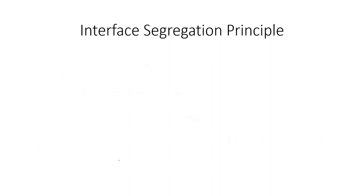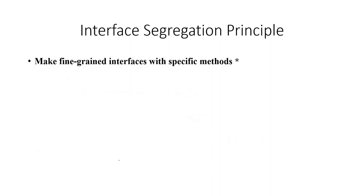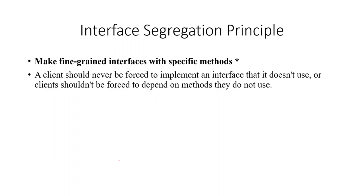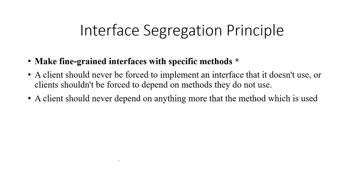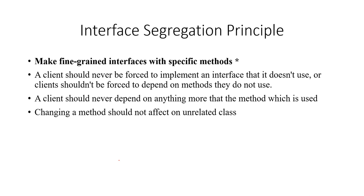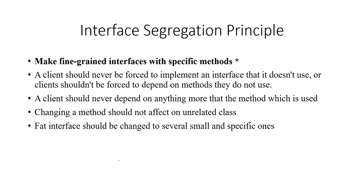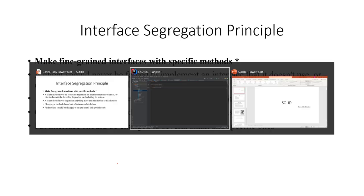Next is the Interface Segregation Principle. It says we need to make fine-grained interfaces with specific methods. A client should never be forced to implement an interface it doesn't use, or depend on methods it doesn't use. Changing a method should not affect an unrelated class, and fat interfaces should be split into several small, specific ones.